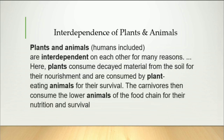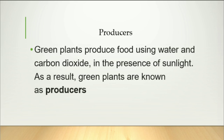Interdependence of plants and animals: Plants and animals, humans included, are interdependent on each other for many reasons. Plants consume decayed material from the soil for their nourishment and are consumed by plant-eating animals for their survival. The carnivores then consume the lower animals of the food chain for their nutrition. Green plants produce food using water and carbon dioxide in the presence of sunlight; as a result, green plants are called producers.